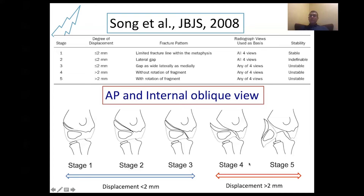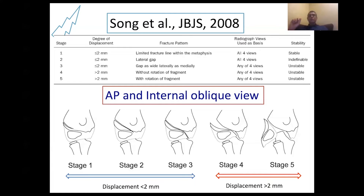Types four and five are displaced fractures, and types one, two, and three are undisplaced fractures or displacement less than two millimeters. Importantly, these measurements and this assessment should not be done in the anteroposterior or lateral view — it should be done in the anteroposterior view with internal rotation, meaning the oblique view of the elbow with internal rotation. Please obtain this view for every child you suspect has a lateral humeral condyle fracture.